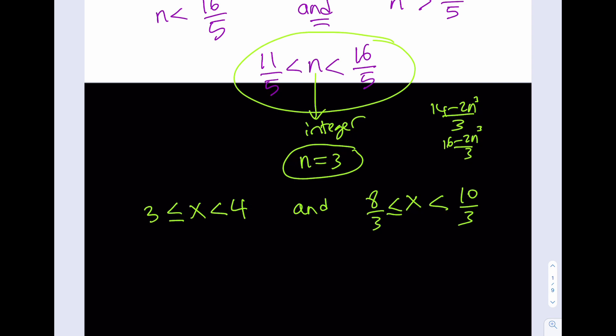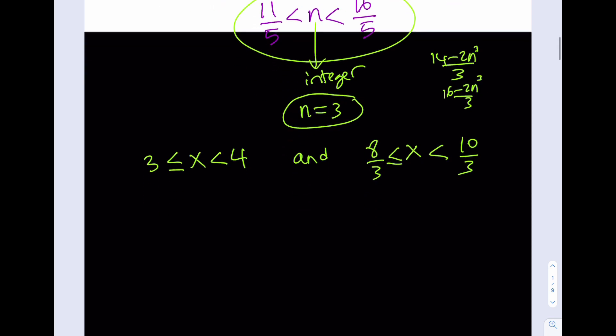So this is my conclusion. x needs to be between 3 and 4 and 8 thirds and 10 thirds. But what is that supposed to mean? Well, here's one fact. You can go ahead and find the intersection of these two. And that would mean that x is between, since this is about 2.6-ish, this means x needs to be between 3 and 10 thirds because 4 is obviously greater than 10 thirds. So we need to have this. So this is my conclusion. But is that the solution?